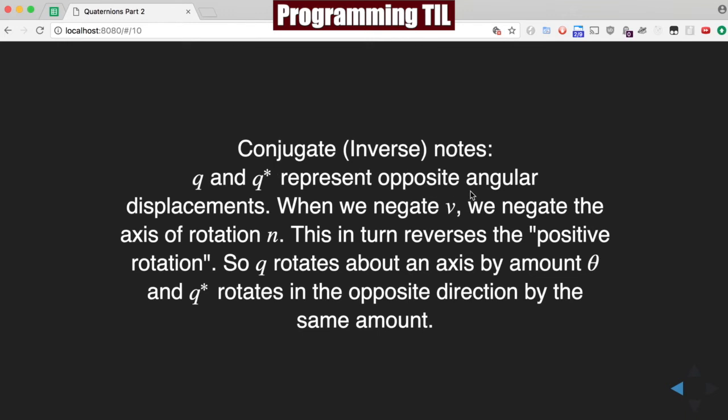So q and q splat represent opposite angular displacements. When we negate v, we negate the axis of rotation n. So this basically reverses the positive rotation. So if q rotates about an axis by an amount theta, q splat represents the opposite direction by the same amount.